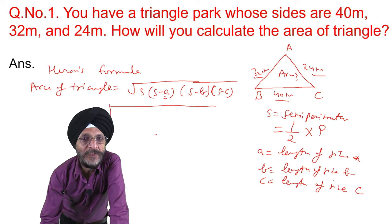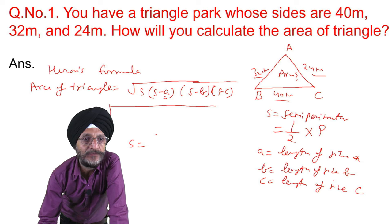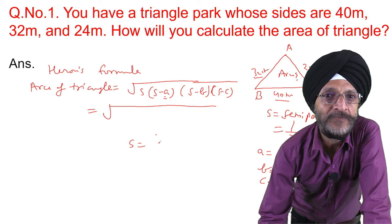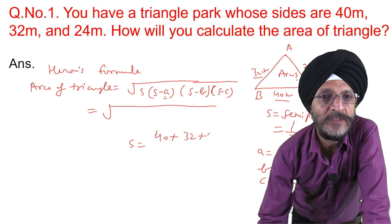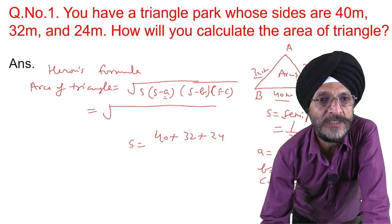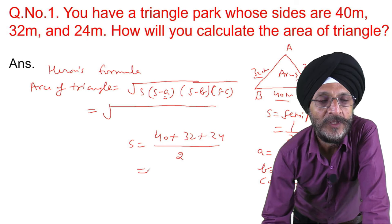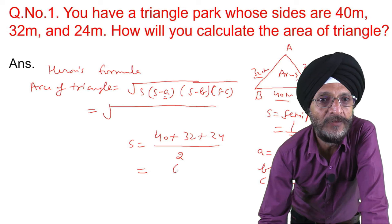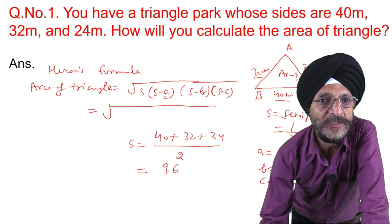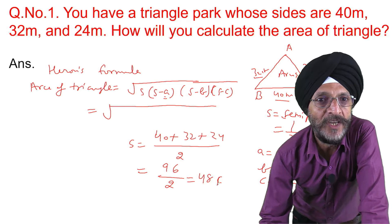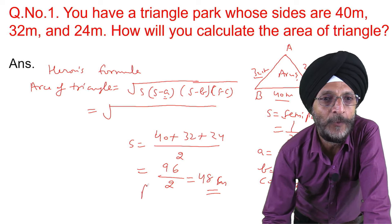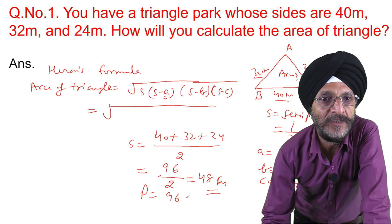First, we will calculate the value of S. It is half of the perimeter. The perimeter is the total of A, B, and C. When we calculate the total, it comes to 96 over 2. So S is equal to 48 meters. The value of the perimeter P is 96 meters.